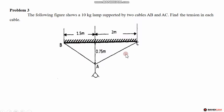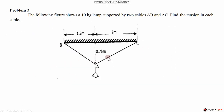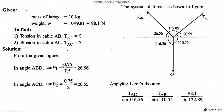From the free body diagram we need to find the tensions. We identify the angles — theta for each cable direction. The opposite side is 0.5 and the adjacent side is 1.5, so we substitute these values to find the angles.